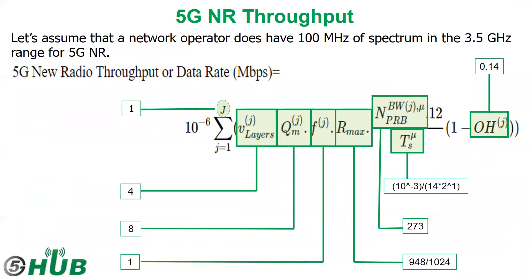Now we can take an example for a network operator that has 100 MHz of spectrum in the 3.5 GHz range for 5G new radio, and the throughput will be as below.